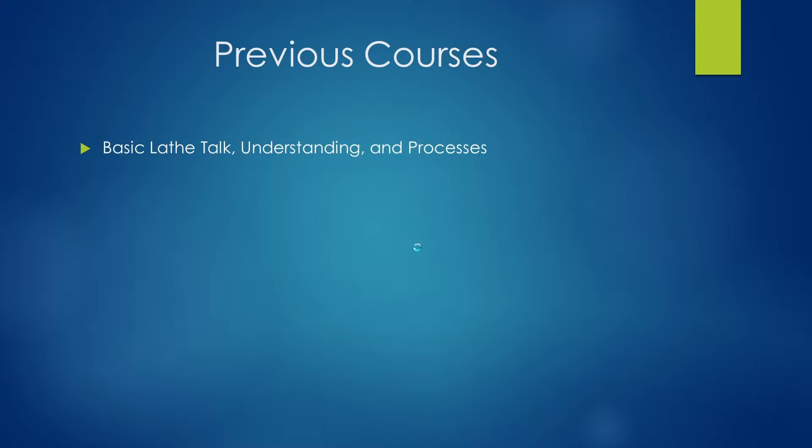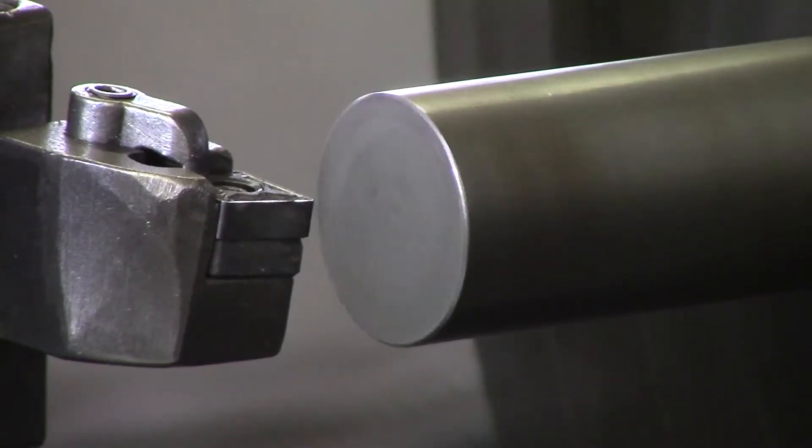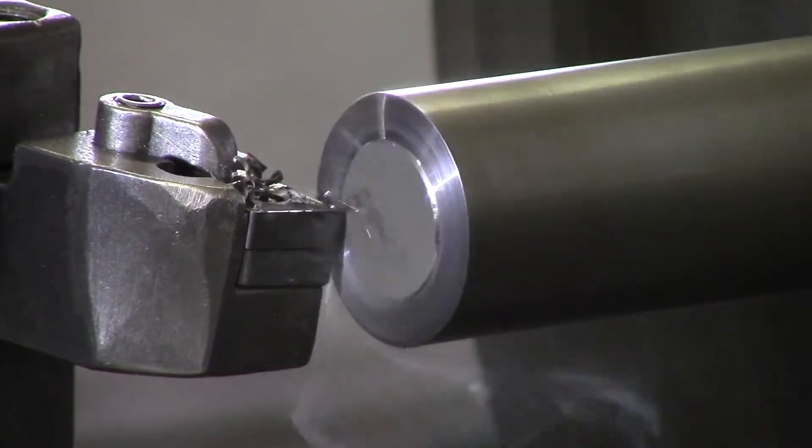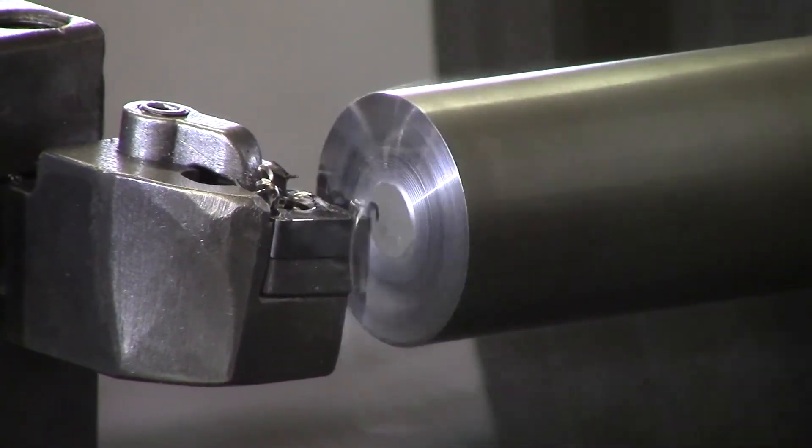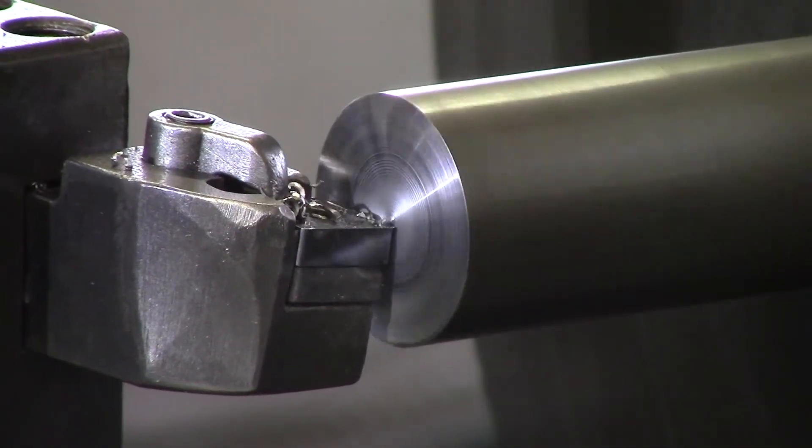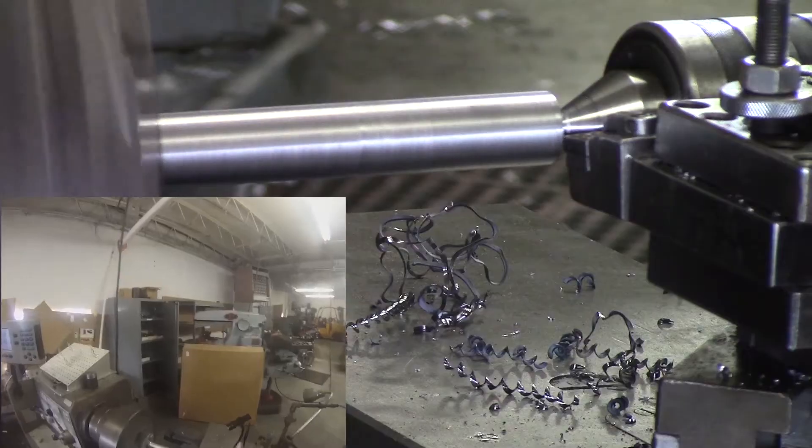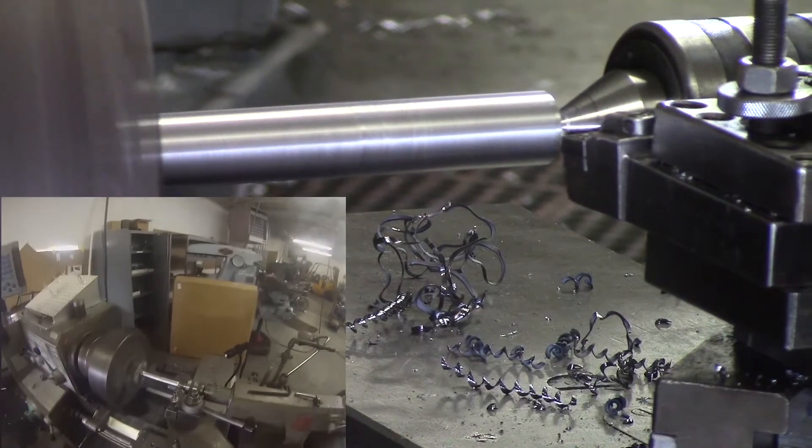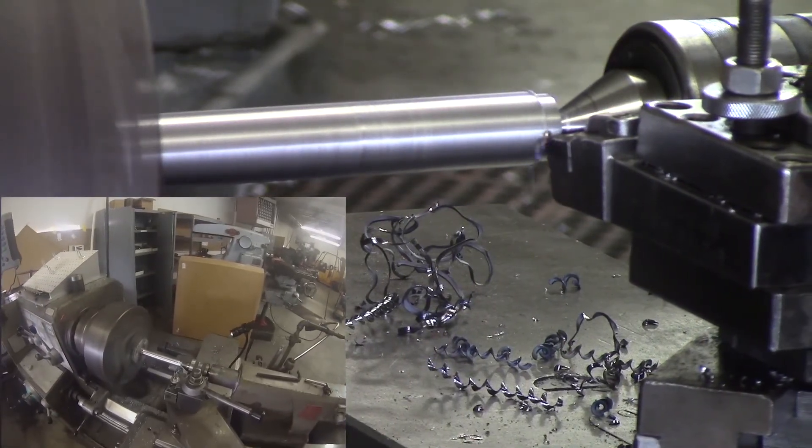Now as a machinist you will learn different ways of processing and machining through different people. The different mentors of your life will show you five different ways to do something. Therefore, in order to become the best machinist you can be and perfect this art of cutting metal, you need to take what we teach you, what you're going to learn from future mentors, and learn from the mistakes that others make. Combine all this and develop your own techniques.